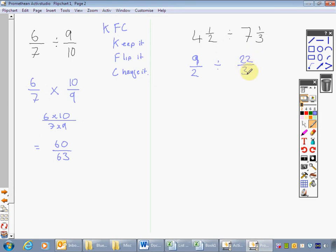Now let's go for it. K. F. C. Keep it. Flip it. Change it. Keep it. Flip it. Change it. And that becomes 9 times 3 divided by 2 times 22, which equals 3 9ths of 27 over 44.